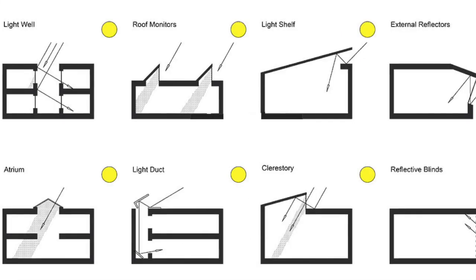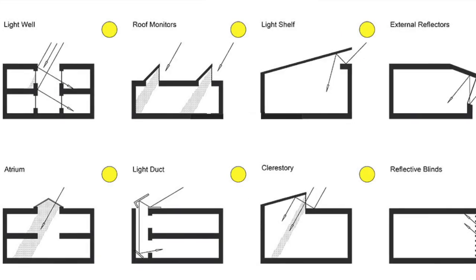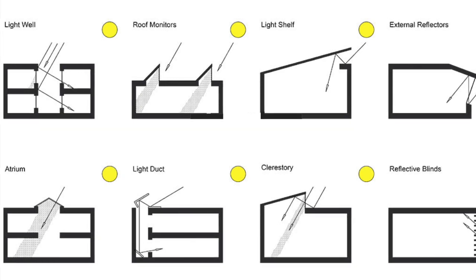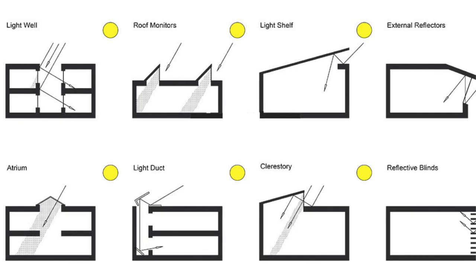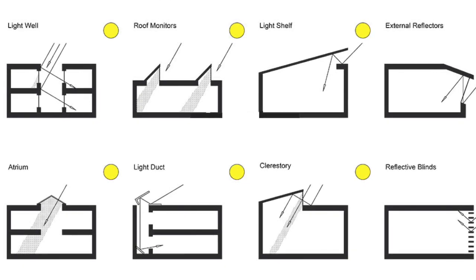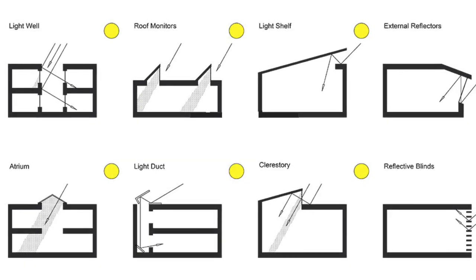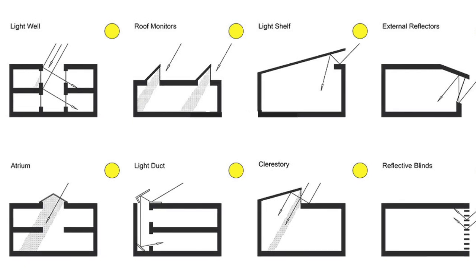It is easier to get top light system to work well than it is for side lighting system. In top light system, the light shines from above and creates uniform lighting on horizontal surfaces and walls similar to electric lighting.